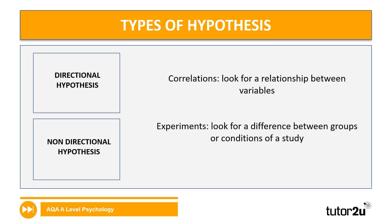We looked at, in a previous session, the difference between a directional and a non-directional hypothesis — in the sense that a directional hypothesis looks for the direction of results and specifies that, whereas the non-directional says something's going to happen but doesn't specify what that something is. So far, we've looked at experiments in the context of writing a hypothesis and the experimental hypothesis.